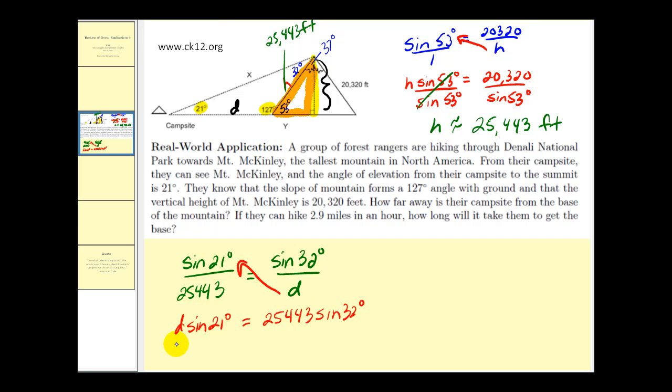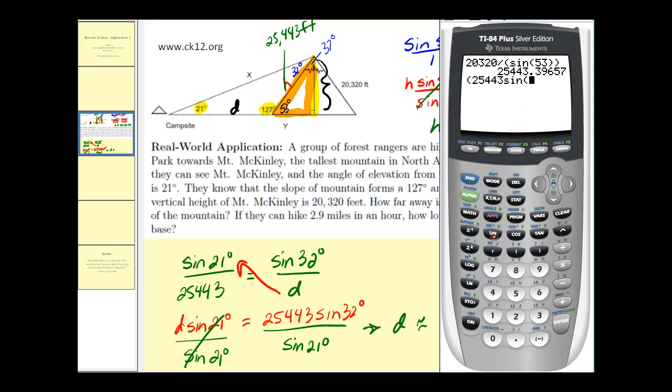Now divide by sine 21 degrees. This gives us D on the left. And now let's go back to our calculator to determine this value. And so D is approximately 37,622 feet.